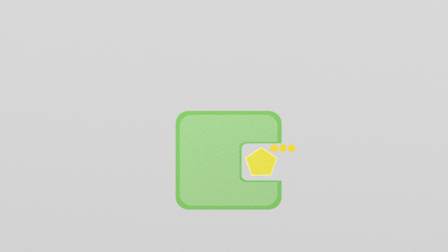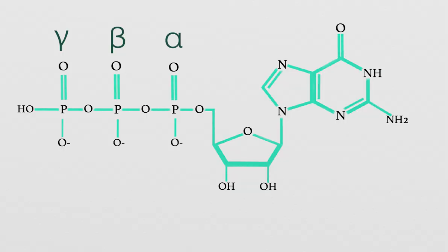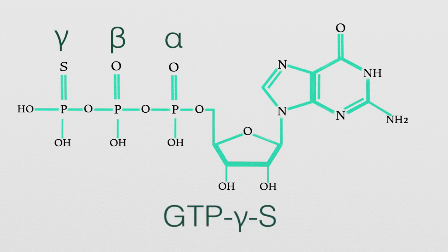Researchers can study the unique functions of GTPases by using guanosine substrates that don't respond to the functions of GAP and GEF. One GTP analog that is commonly used is called GTP gamma-S.